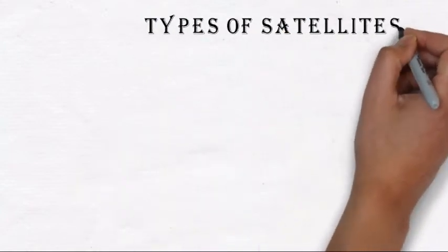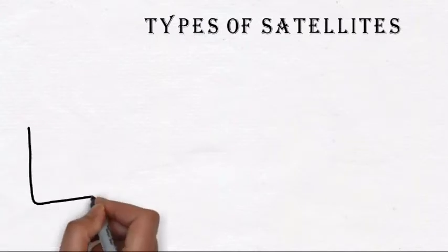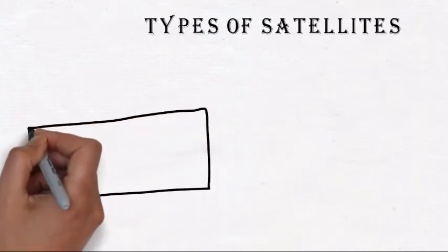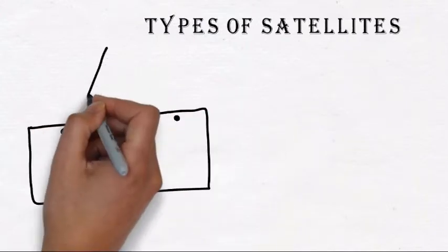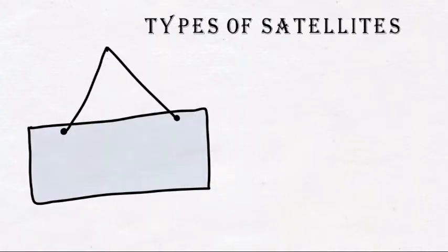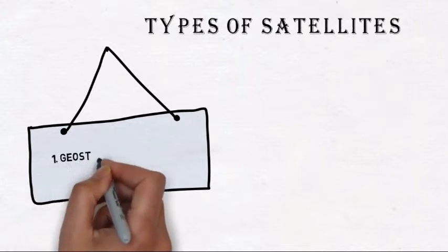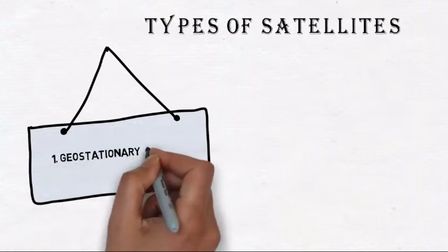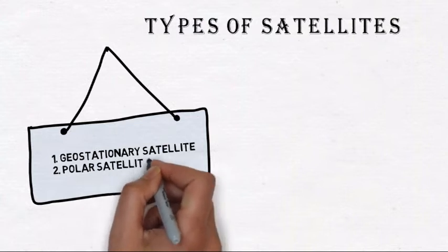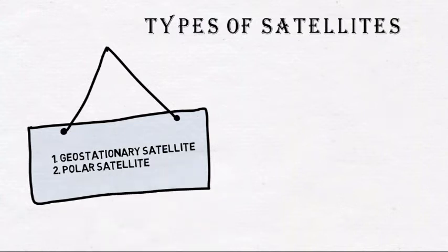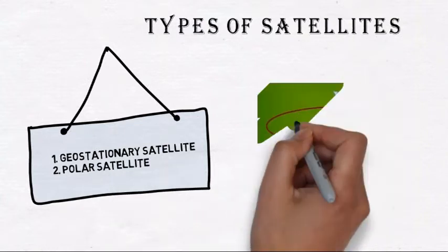Types of satellites: first, geostationary satellites; second, polar satellites.